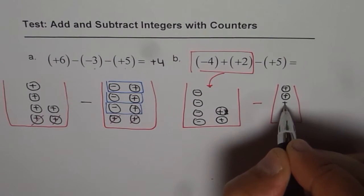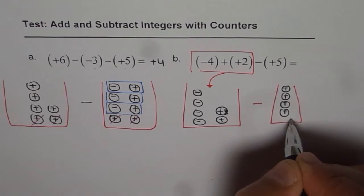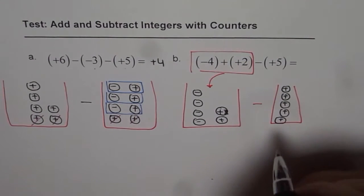So that is what we have in the first container from which we have to take away (+5). So let me draw 5 here. 1, 2, 3, 4 and 5. Now how can we do it?